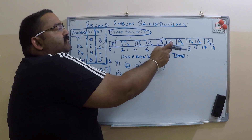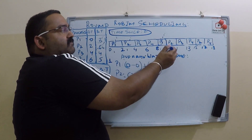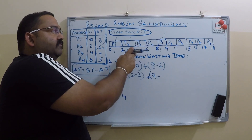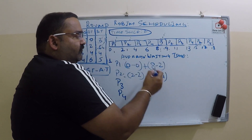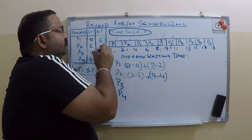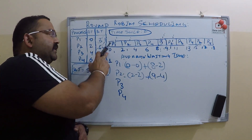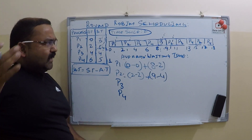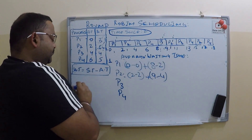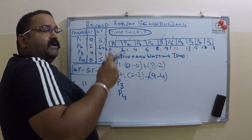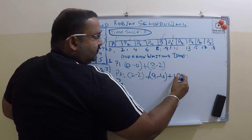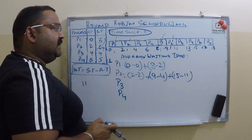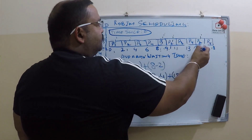Again, at what time did P2 get CPU attention? At time 9. So that is start time 9 minus arrival time 4, giving 5 for the second slice. P2 finishes the second burst, but 2 seconds are still left, so P2 goes to the wait queue again at time 11. Then P2 gets the CPU attention again at time 15, so 15 minus 11 gives 4 for the third slice. P2 is now finished.